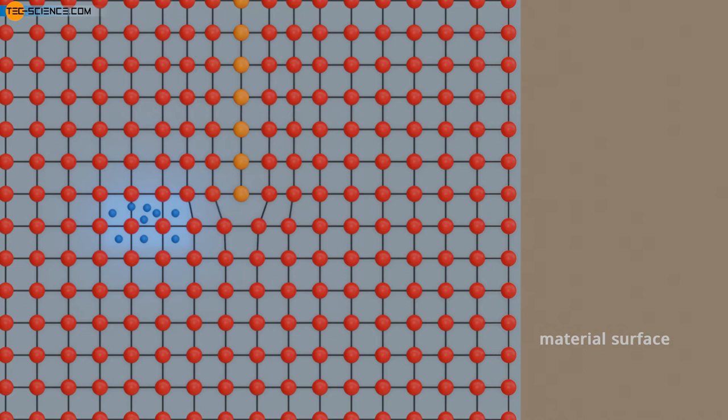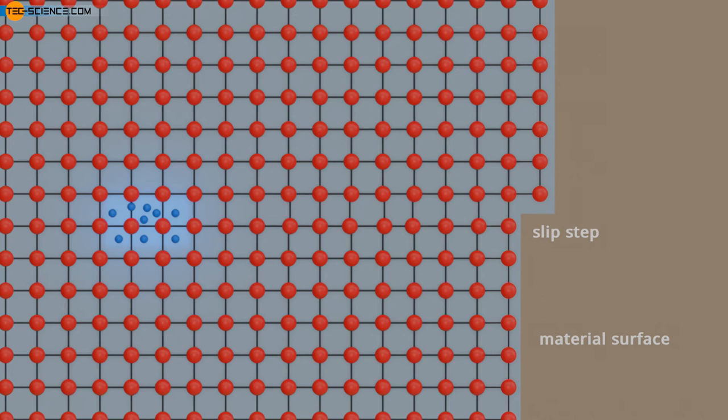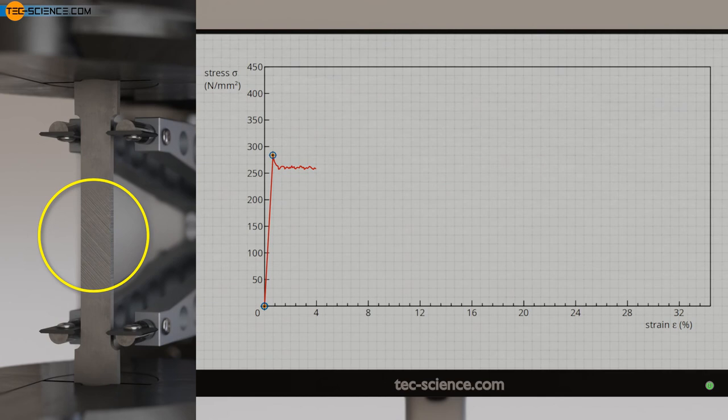The dislocations emerging on the surface of the specimen during yield-point elongation result in so-called slip steps. Since the reflections change at these microscopic distortions, these slip steps can be seen as a matte, stripe-shaped mesh on the shiny surface of a flat specimen.